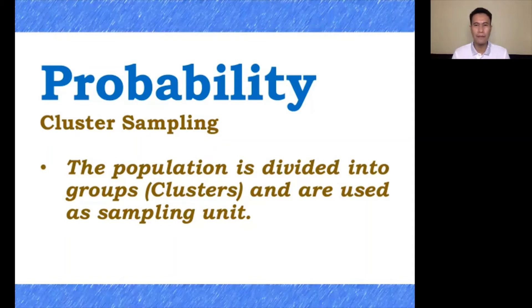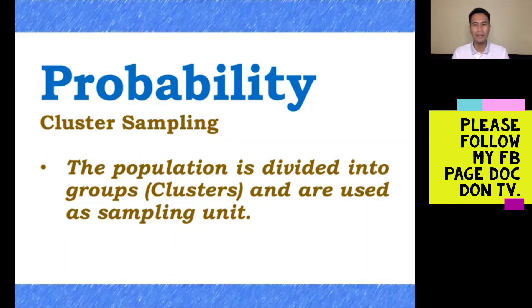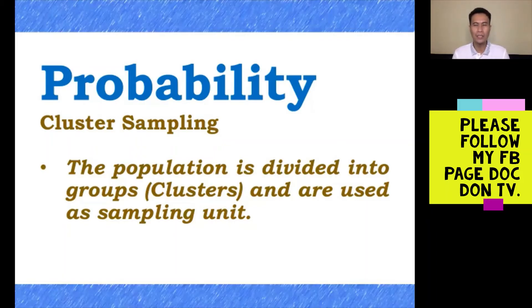For two-stage cluster sampling, a selection of individuals from each cluster is then randomly selected for inclusion. You will use simple random sampling to choose the members from each chosen cluster to be part of the research study, until you reach your desired number of participants.